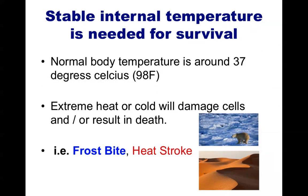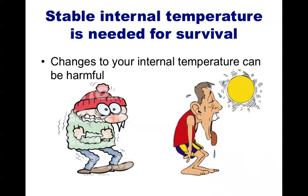This might seem like common sense. Your normal body temperature is around 37 degrees Celsius, or 98.6 degrees Fahrenheit. We can go outside in cold weather, but the inside of our bodies will stay warm around this temperature. If you go out and stay too long and it is too cold, your internal temperature will drop and you'll get frostbite. Likewise, staying outside in the heat too long can give you heat stroke or dehydrate you. Changes to your internal body temperature can be harmful.